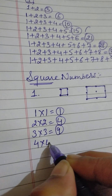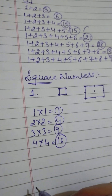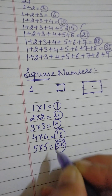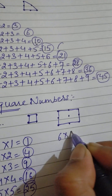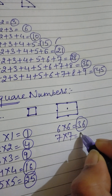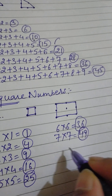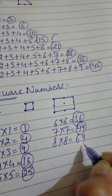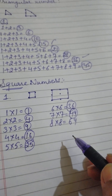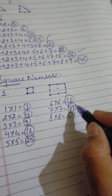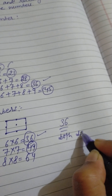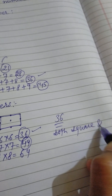Continuing: 4 times 4 equals 16, 5 times 5 equals 25, 6 times 6 equals 36, 7 times 7 equals 49, and 8 times 8 equals 64. We can see that 36 also appeared in our triangular numbers list, and 36 also appears as a square number. So 36 is a number that is both a square number and a triangular number.